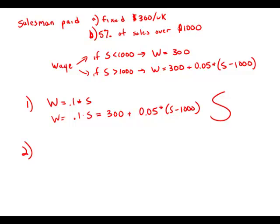Statement number two tells us, quite simply, his sales are $5,000. If we know the sales, then we can plug into the equation and figure out the wage. We don't actually have to go through the steps — it's enough to know that we could. This statement supplies sufficient information to answer the question.